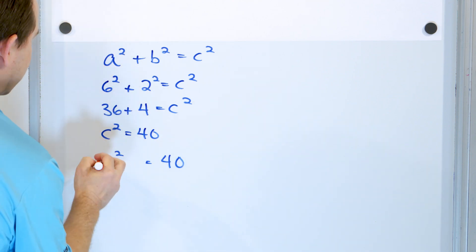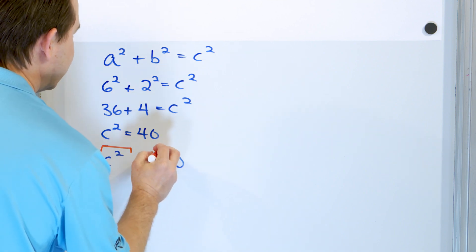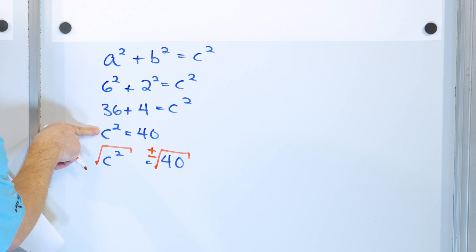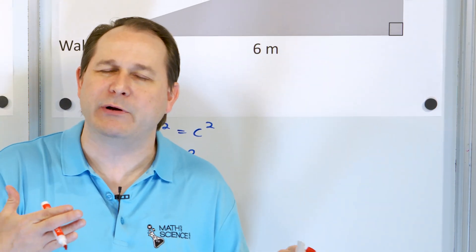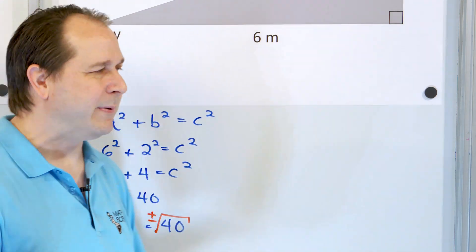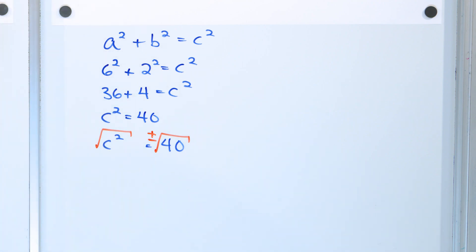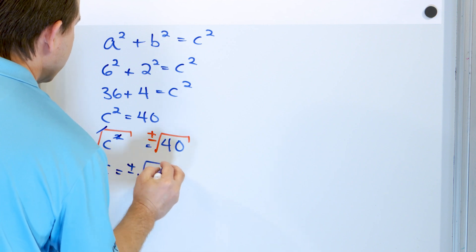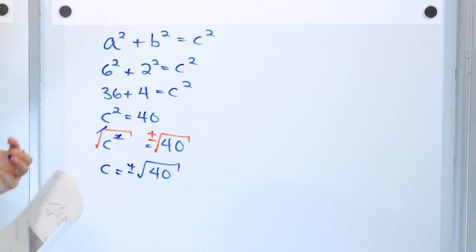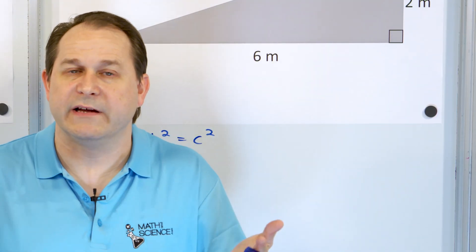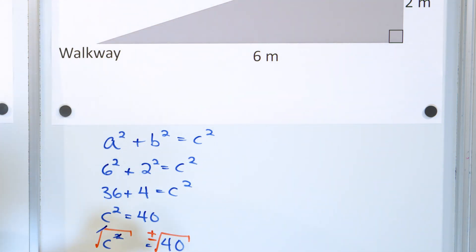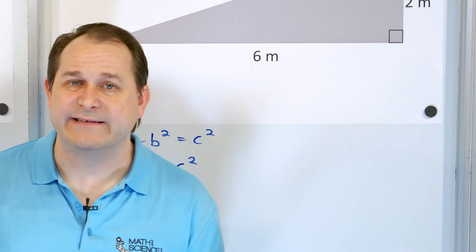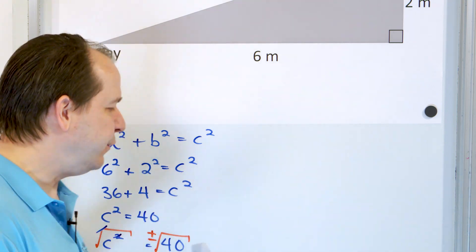How do we get rid of that square? We do the opposite — a square root. If we do it on one side, we have to do it on the other side. Because we apply our own square root, we insert a plus or minus, since there really are two answers — one positive and one negative. But for a ramp distance, a negative value isn't physical, so we discard it. Now, what is √40? I know 6 × 6 = 36, which is close, and 7 × 7 = 49, which is too big. So it has to be between 6 and 7.